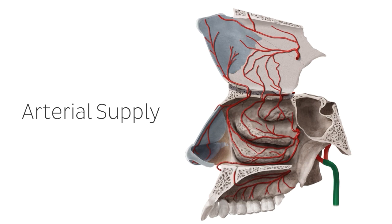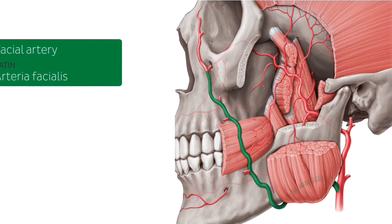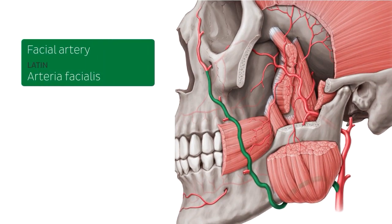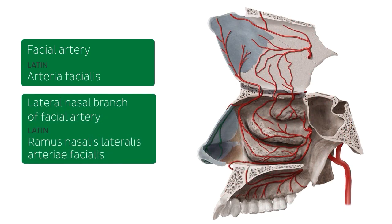Let's first take a look at the facial artery and its main branches to the nasal cavity. The facial artery branches anteriorly off the external carotid artery, then curves upwards over the mandible and over the angle of the mouth to run alongside the nose. As it passes the nose, it gives off a branch which supplies the nasal cavity. This branch is referred to as the lateral nasal branch of the facial artery, and we can see it highlighted in green here. This branch supplies the skin of the nose.